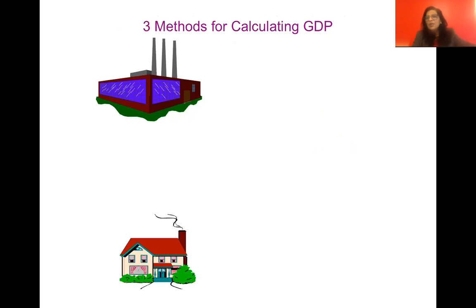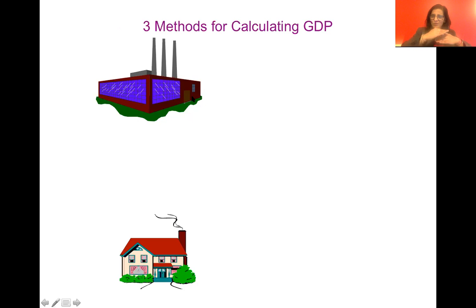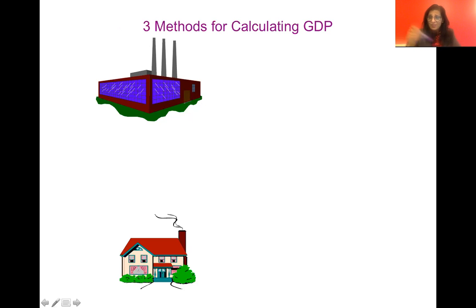Now, how do we calculate GDP, and what is GDP? GDP is the market value of final goods and services produced within an economy. We are referring to all goods and services produced by firms in this economy. Even when a household provides a service, it becomes part of a firm or is providing a resource there, so the firms produce the goods and services.